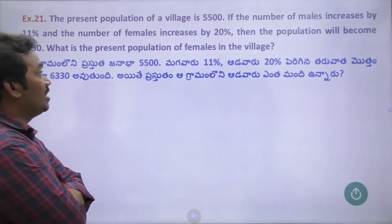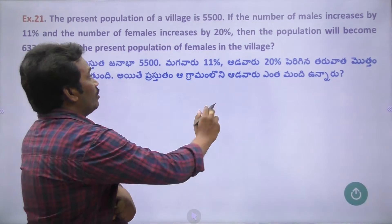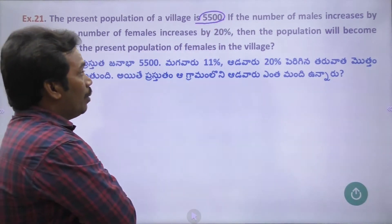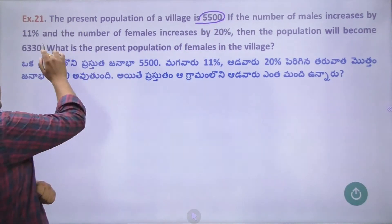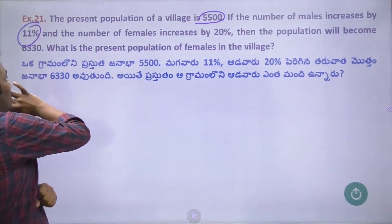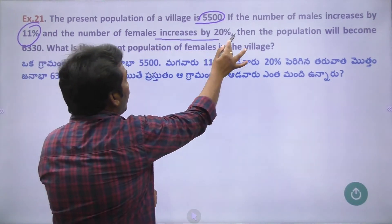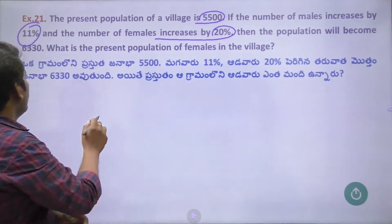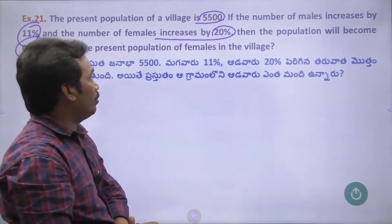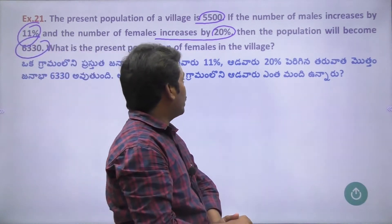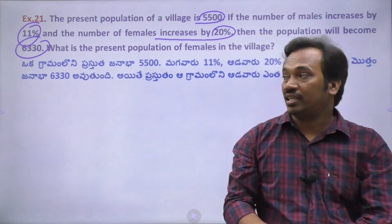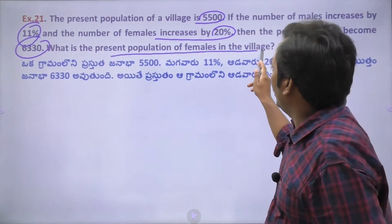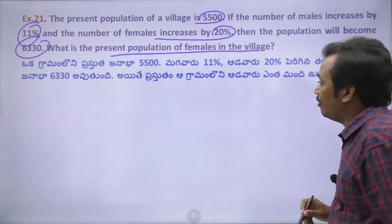Problem number 21: The present population of a village is 5500. If the number of males increases by 11%, and the number of females increases by 20%, then the population will become 6330 members. We need to find the present population of males and females - specifically, what is the present population of the females in the village?